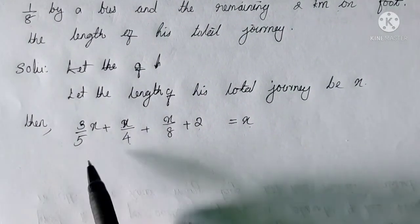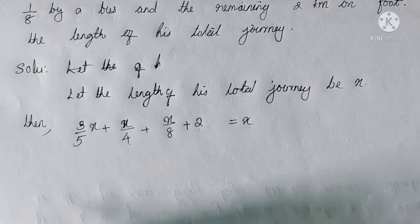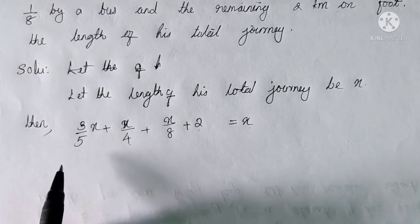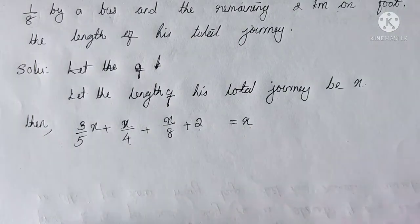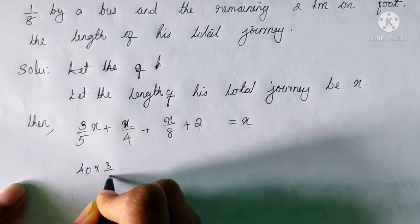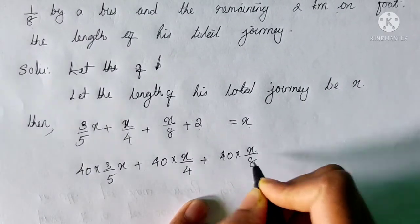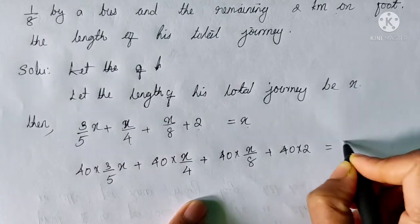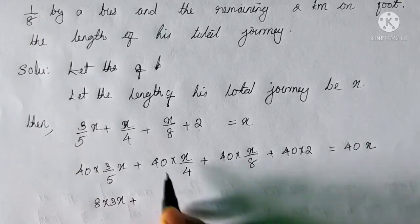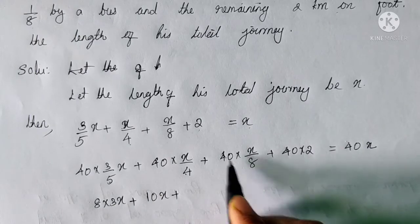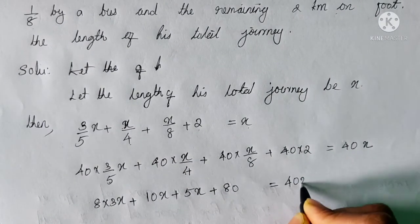The denominators are 5, 4, and 8, so the LCM of these denominators is 40. We can multiply each term by 40 so all the denominators will cancel. Then: 40 into 3X/5 plus 40 into X/4 plus 40 into X/8 plus 40 into 2 is equal to 40 into X. 40 divided by 4 cancels to 10X, 40 divided by 8 cancels to 5X, and 40 into 2 gives 80, equal to 40X.